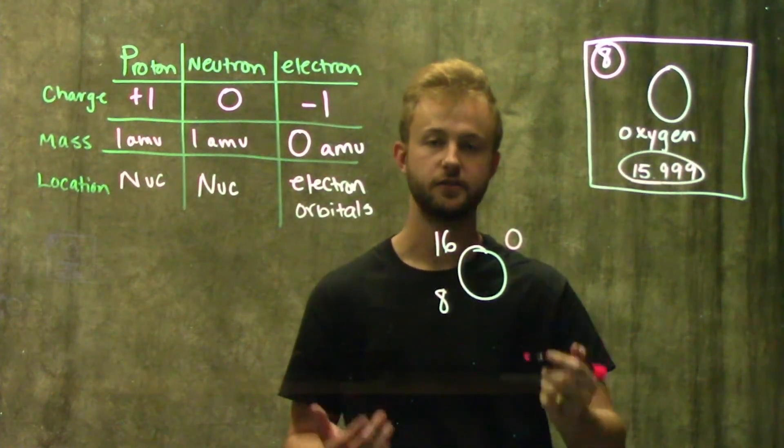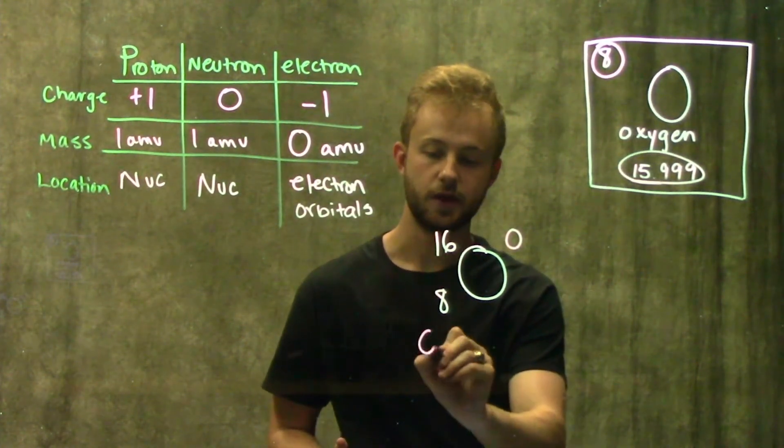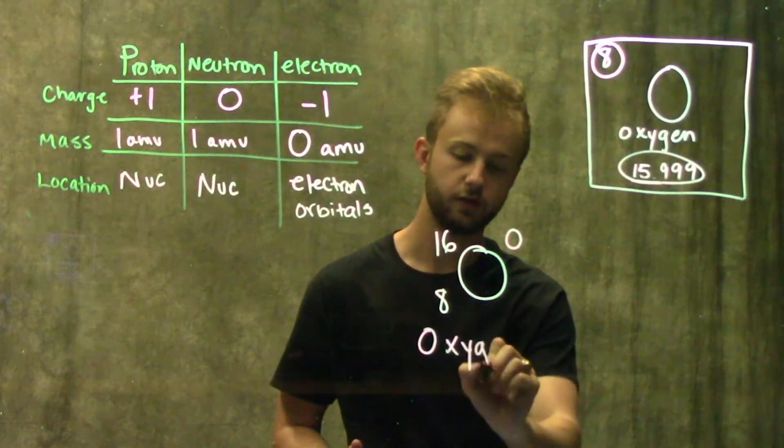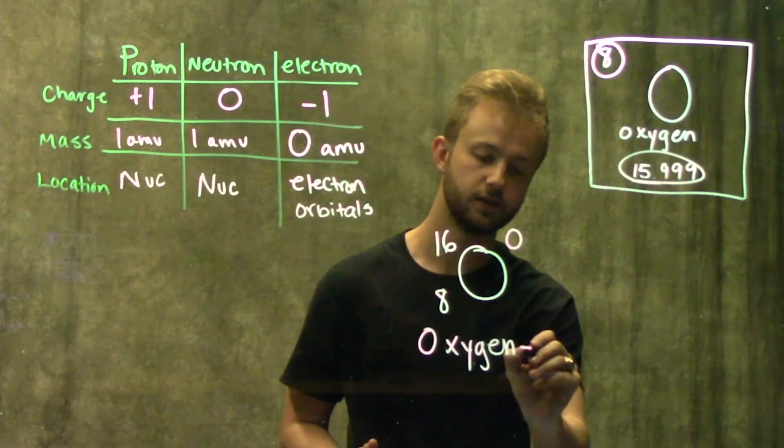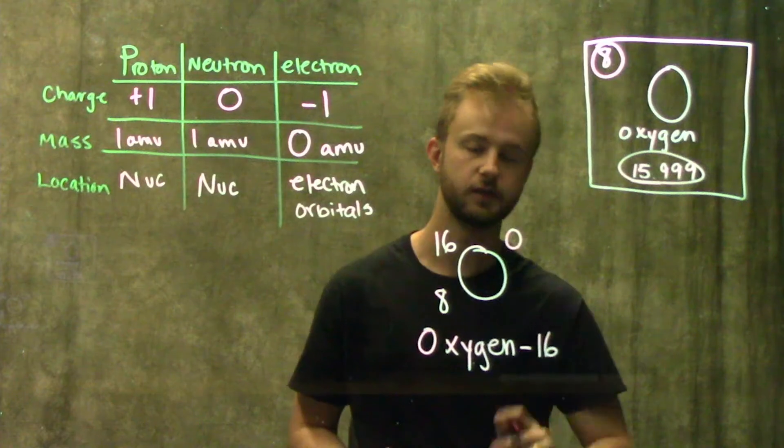So this is read as oxygen 16. And you may also sometimes see it written out as a name of the element, a dash, and then the atomic mass.